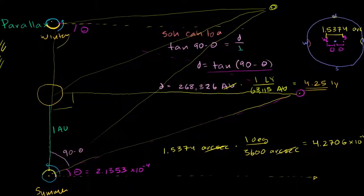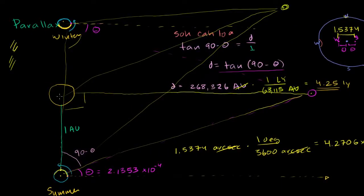what you want to do is pick two different points six months apart. So if this is the sun, you want to pick two different points six months apart where it does form an isosceles triangle. So if this is the distance from the sun to this other star, right over here,